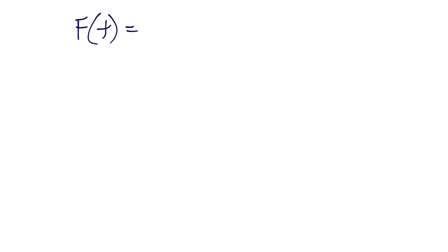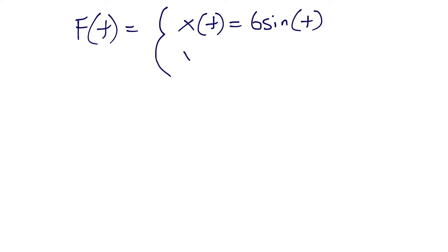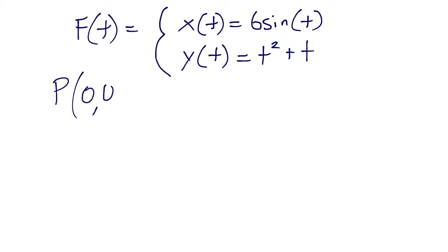Let's find the slope of the tangent line for the following parametric curve. We have f of t where x of t equals 6 sine of t, and y of t equals t squared plus t. This is our parametric curve. In order to find the slope of the tangent line, we first have to identify a point. We'll call it point P and set it at the origin, (0, 0).